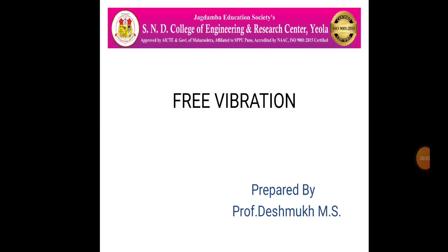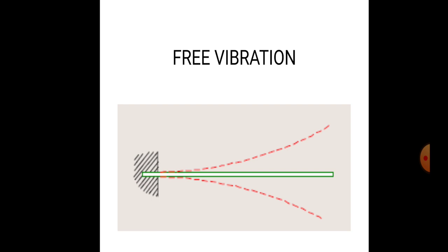Welcome. This is the 3rd lecture on the subject of Theory of Machines, with the topic of free vibrations. Free vibrations occur when a shaft is connected to a fixed support and an initial moment is applied, causing the body to vibrate in two extreme motions — that is the case of free vibrations.